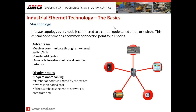Some disadvantages of star topology: it does require more cabling because I have to run all of my devices to a central point, which may be further away than the host controller, adding cost through extra cabling. The number of nodes is limited by the switch — with an eight-port switch, I'm limited to eight devices. If I need to add more devices, I need to add a switch, which is an added cost. And if the switch fails, the entire network is compromised.